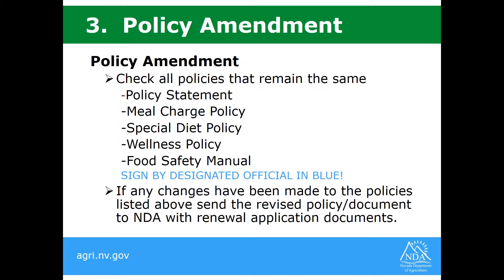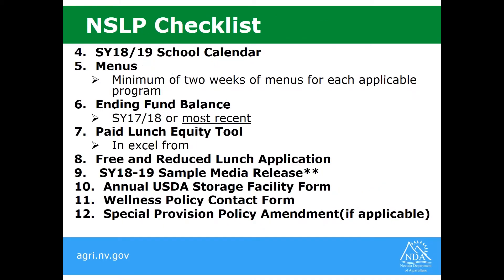Number three for both RCCIs and NSLP is the Policy Amendment. This is a new form created by NDA to ease the burden of collecting so many documents. With this amendment, you are going to put a check next to all of the forms or policies that have remained the same from last year — your policy statement, meal charge policy, special diet policy, wellness policy, and your food safety manual. You will sign by the designated official in blue. If there have been changes made to these policies, then you are going to send in that revised document along with your other renewal application documents.